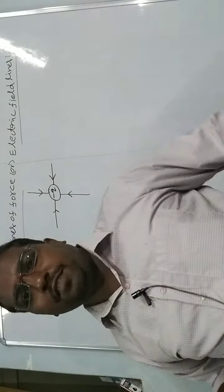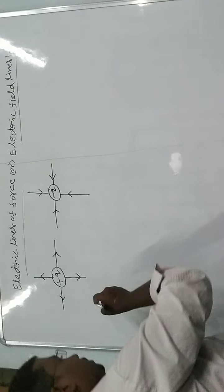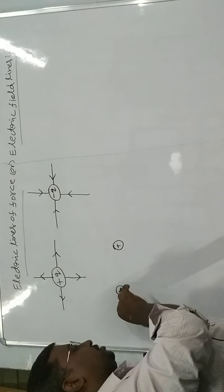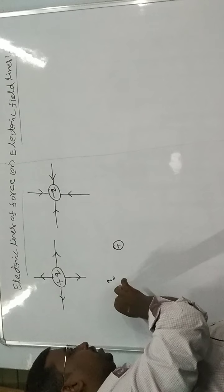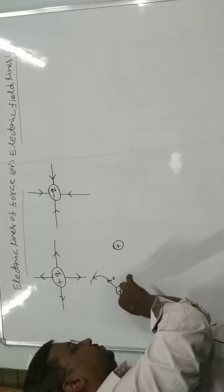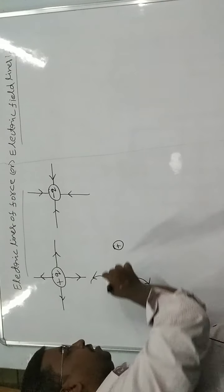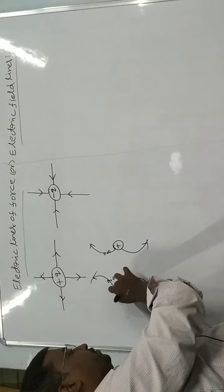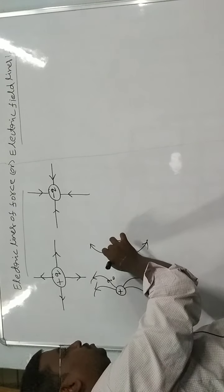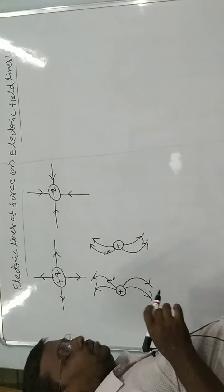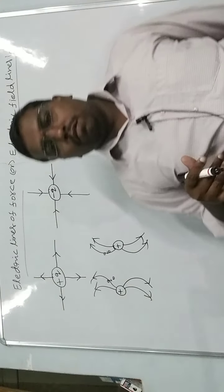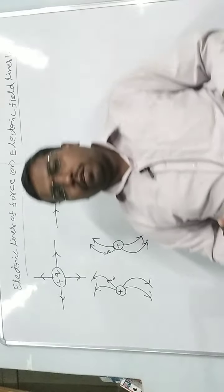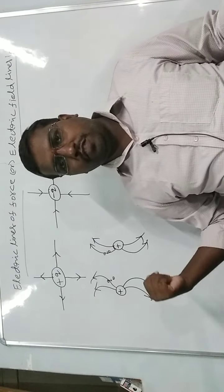If we take two positive charges — like charges — and release a plus Q-naught near the first one, it will be repulsed. Placing it near the second positive charge also results in repulsion. So when we take two positive charges near to each other, these electric lines do not combine with each other — they move away from each other. This is why like charges repel each other, based on this concept.